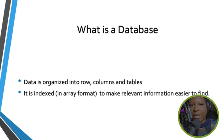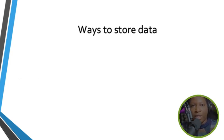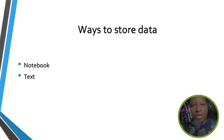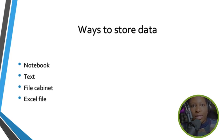An index is like an array — it starts from 0, 1, 2, 3, 4, 5, and up. There are lots of ways you can store data: in a notebook, as text, in a file cabinet, in an Excel file, or in a database.